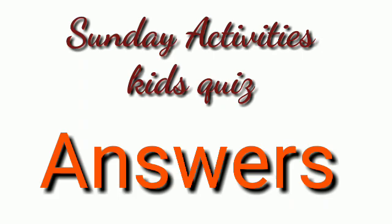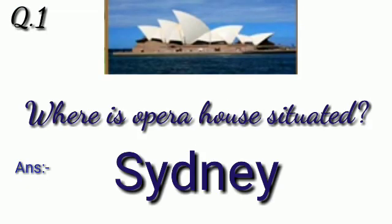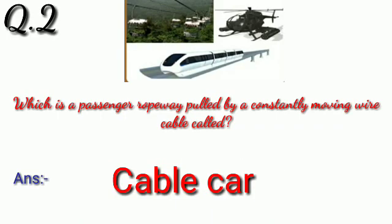Our first question was: Where is the Opera House situated? So it will be Sydney. Which passenger ropeway is pulled by a constantly moving wire cable? Cold cable car.